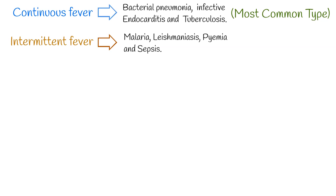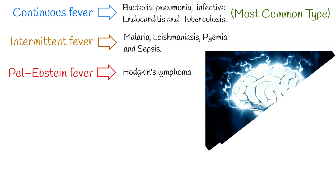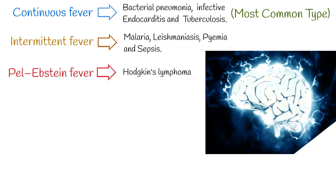Intermittent fever is caused by malaria, leishmaniasis, pyemia, and sepsis. Pel-Ebstein fever is a rarely seen condition noted in patients with Hodgkin's lymphoma, in which the patient experiences fevers which cyclically increase then decrease over an average period of 1 or 2 weeks.